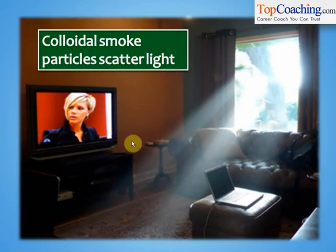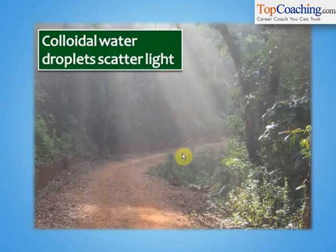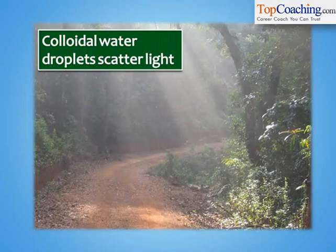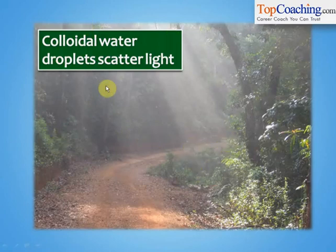The colloidal smoke particles inside the room scatter light. Similarly, if you go to a forest, sometimes you can see a view where the light beam is clearly visible. That happens because dense forests have a lot of water droplets hanging in the air. Light beams strike the water droplets, the light gets scattered, and that is the reason you see mist and rays of light clearly visible. The light beam is visible because of the scattering of light, and when scattering occurs with light striking colloidal particles of a particular size, we call that effect the Tyndall effect. Colloidal solutions show the Tyndall effect.